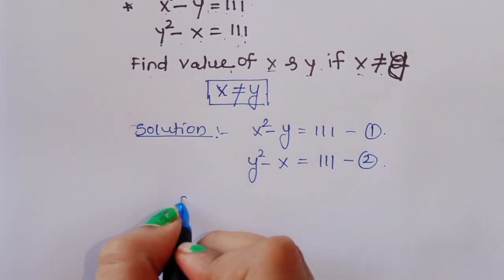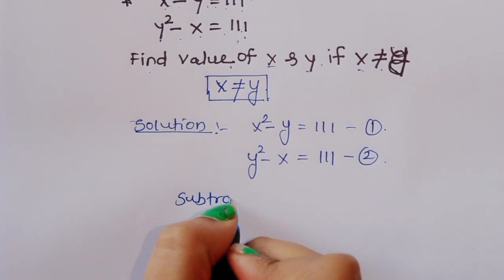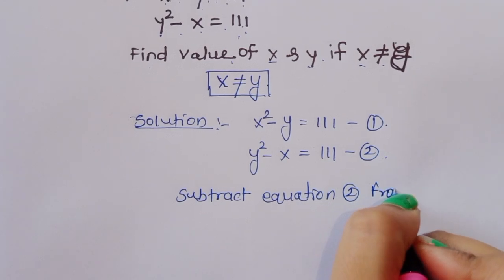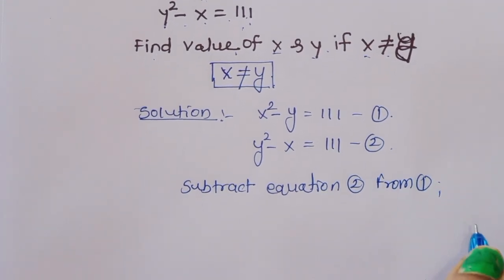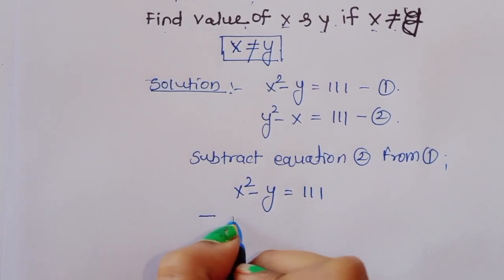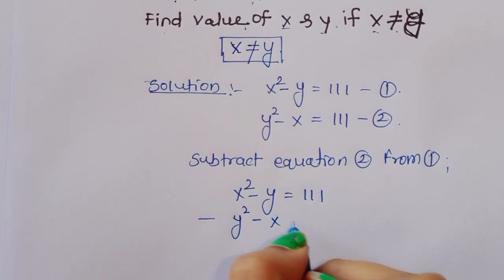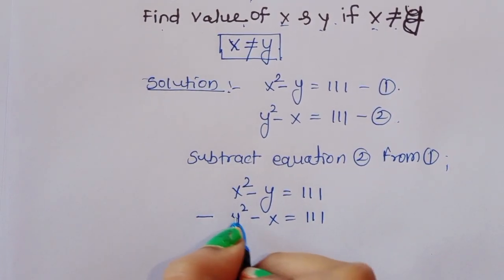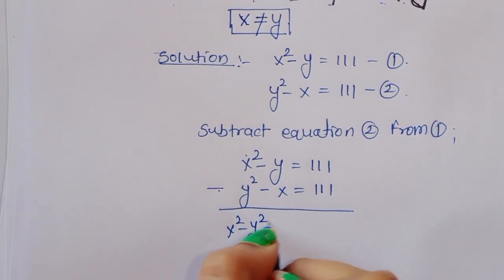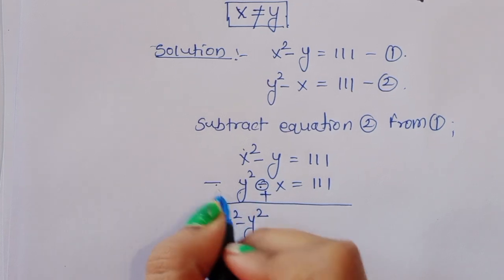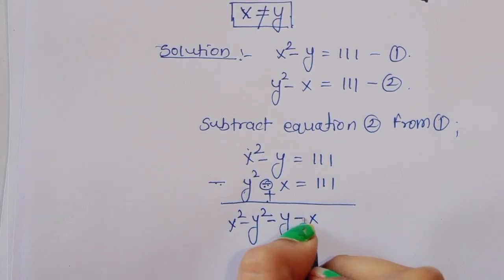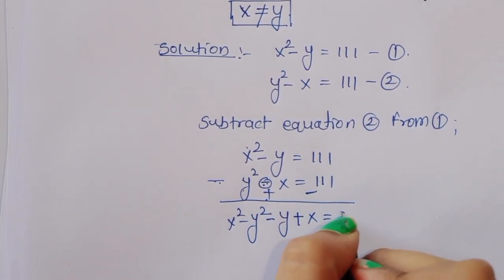We can subtract equation 2 from equation 1. Then we get: (x squared minus y) minus (y squared minus x) equals 111 minus 111. After subtracting, we get x squared minus y squared, and the signs work out so that minus y becomes plus x, giving us x squared minus y squared plus x minus y.